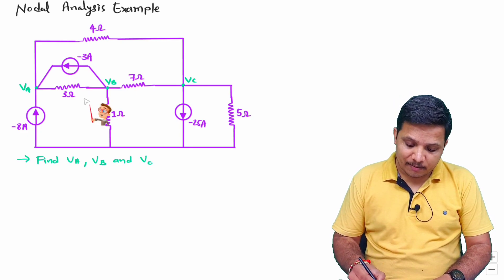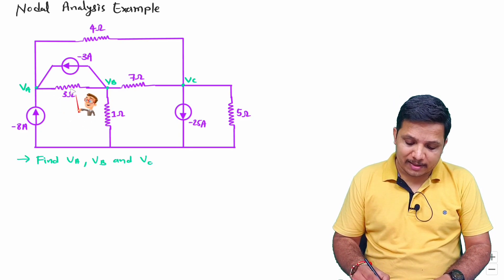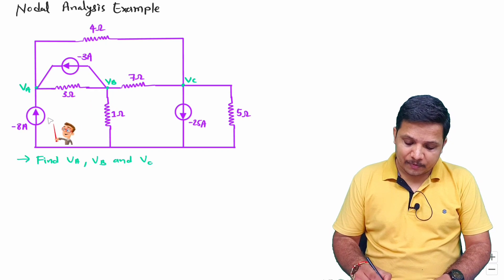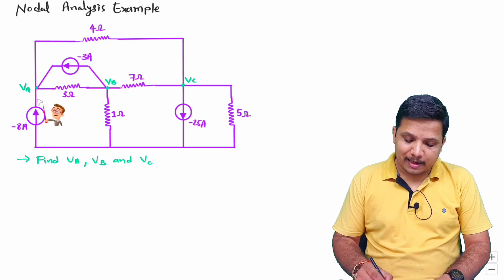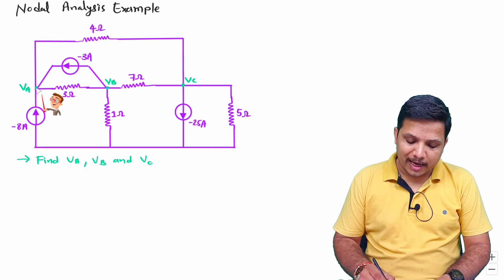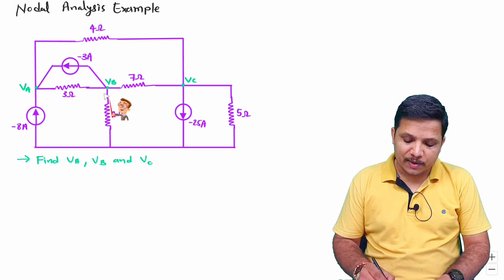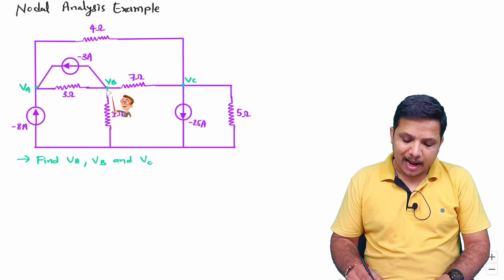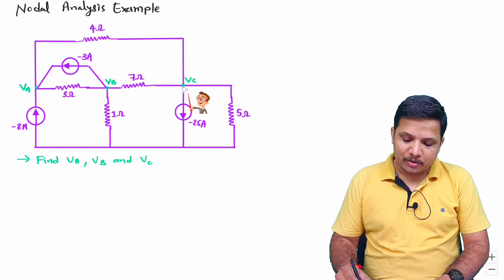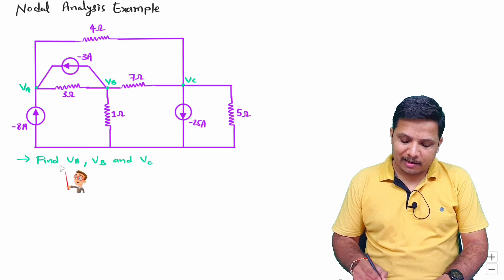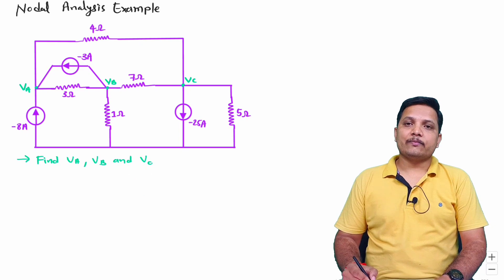Here we have been given one circuit. In this circuit, we have node A at which voltage is VA, at this node voltage is VB, and at this node voltage is VC. That is what we are required to calculate using nodal analysis.